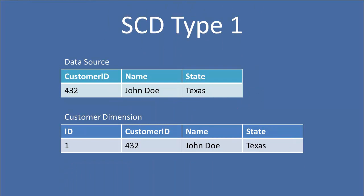So let's talk about type 1. A type 1 dimension keeps track of the current value of all attributes. Again, using the same example, we have John Doe in Texas — that's customer 432. So when we initially load our dimension, we have those same values: name John Doe and state Texas. When the source system changes to Jane Doe in California and we update our dimension, the attribute values are updated in place. So now customer ID 432 matches our source system, but we have no visibility into what the historical values were for the name and state attributes. This is an SCD type 1 — we're keeping track of only the current value.